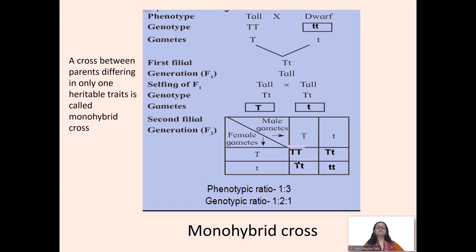So the genotype TT gives 1, Tt gives 2, and tt gives 1. This is the monohybrid ratio: phenotypic ratio 3:1 and genotypic ratio 1:2:1.